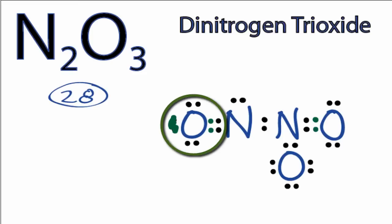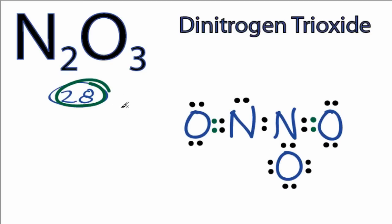Again, the oxygen has an octet, and the nitrogen also has a full outer shell with 8 valence electrons. And we're also still using 28 valence electrons.